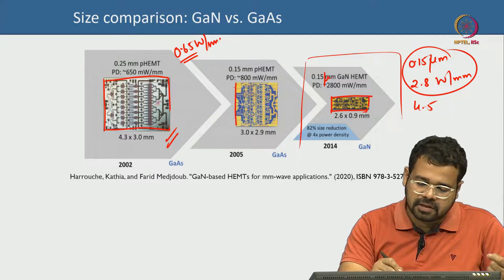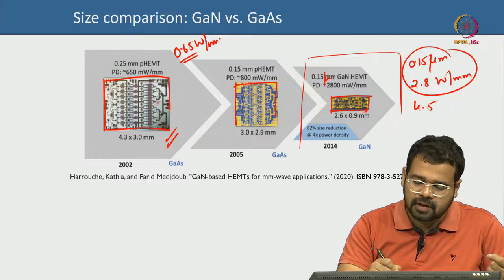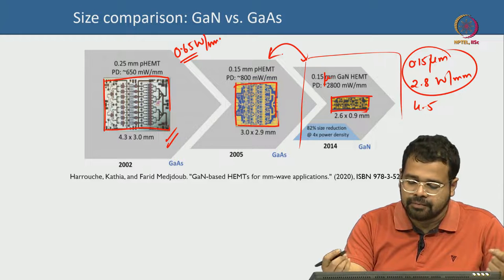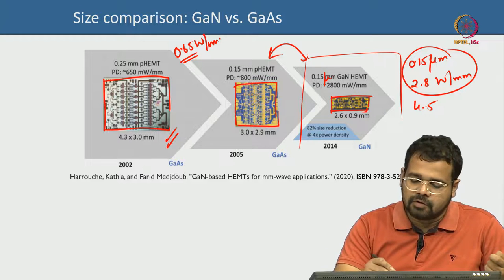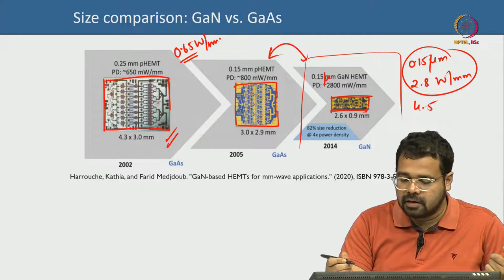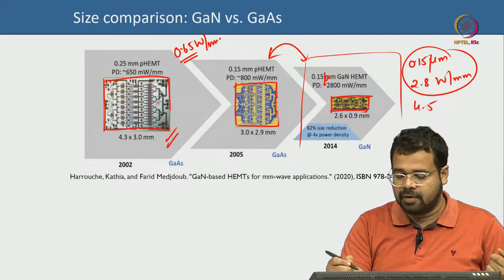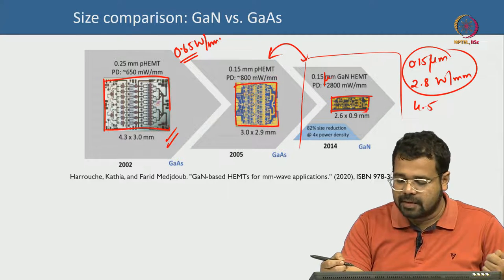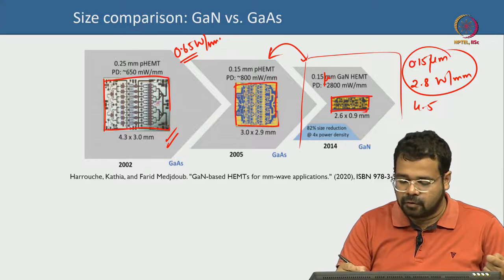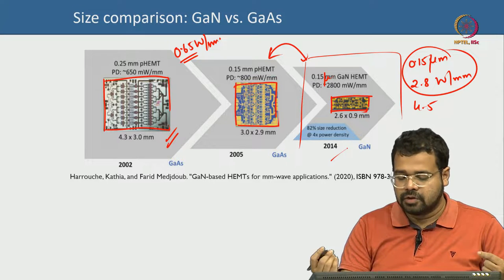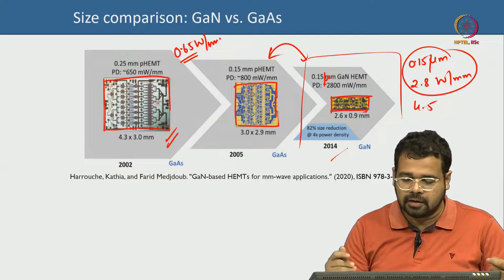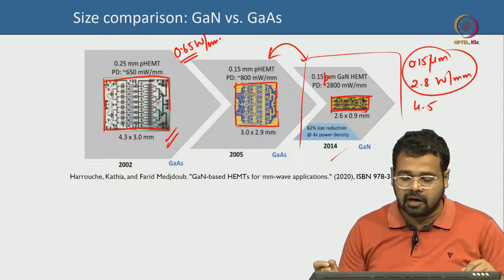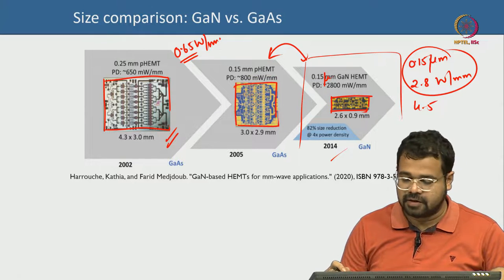This other pHEMT at 0.15 µm gate technology — an apple-to-apple comparison — gives only 0.8 W/mm, still 3 to 4 times lower than GaN, for a die size at least 3 times larger. This was from 2014, about 9 years back, so you can imagine the kind of advancement GaN technology has been making in the RF power amplifier space.